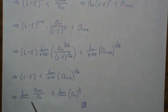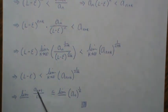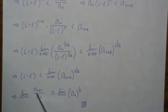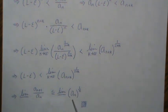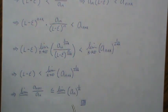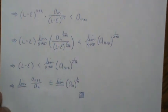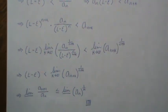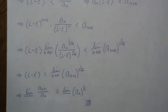The root test conclusion follows: if the ratio test's limit infimum is greater than one, indicating divergence, then the limit infimum of the nth root of A_n is also bigger than one, and it also indicates divergence. Hopefully you enjoyed that — please like the video and subscribe so you don't miss the next one. Thanks, bye.